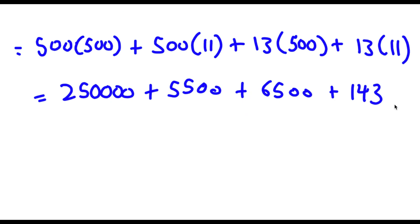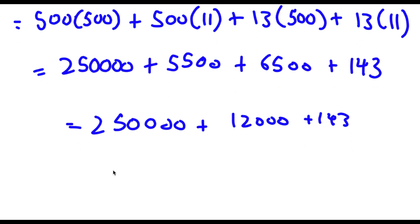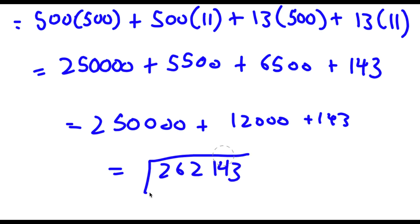So this equals 250,000 plus 5,500 plus 6,500 plus 143, which is 250,000 plus 12,000 plus 143, giving us 262,143. So this is my answer. I'll see you next time.